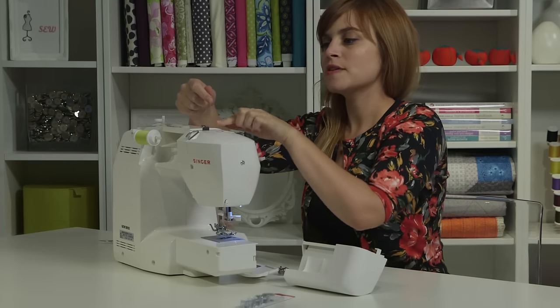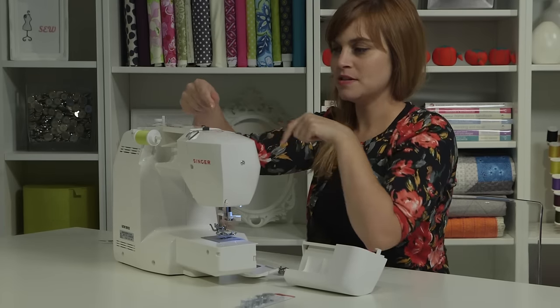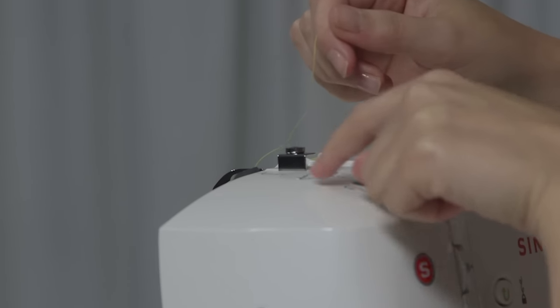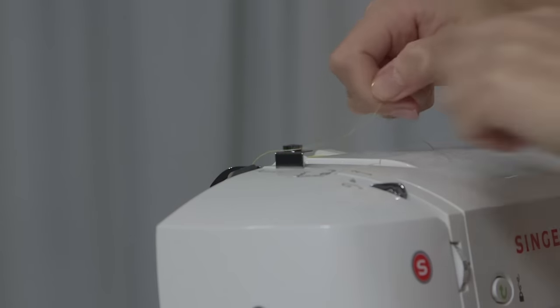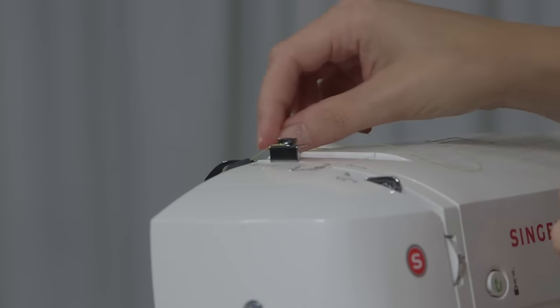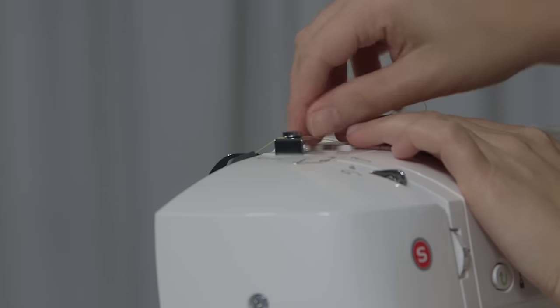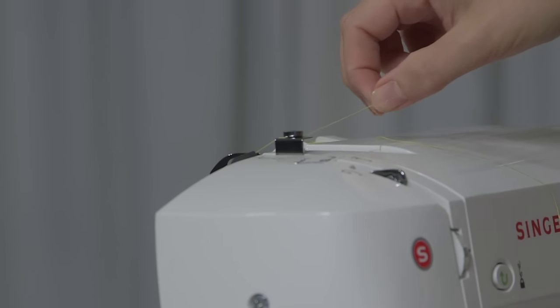Now we're going to find a part that's shaped like a screw, so that's this round piece. This is the bobbin winding tension disc, and you want to do just what it's doing in that picture. You want to go around the screw, and it's very important that the thread goes under the head of the screw. So it should go all the way under, and when you pull on it, you should feel a little bit of resistance.